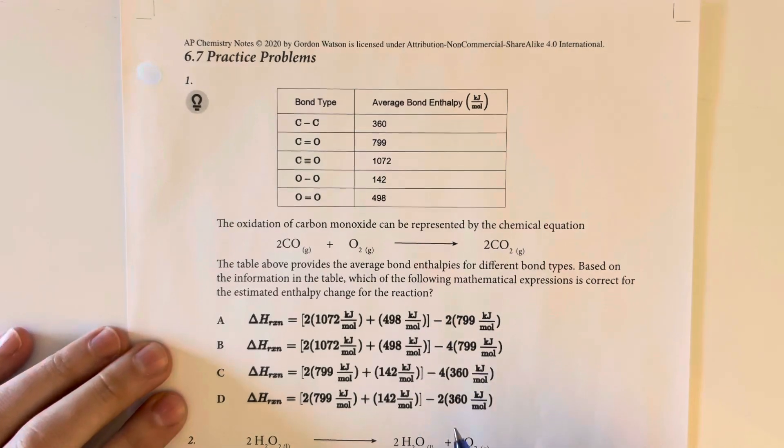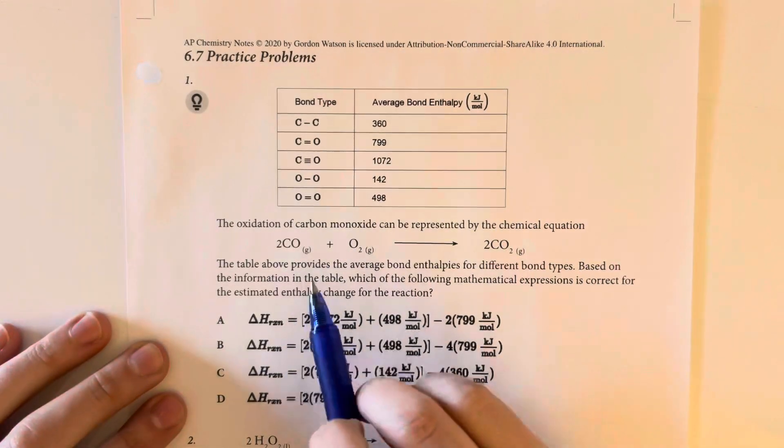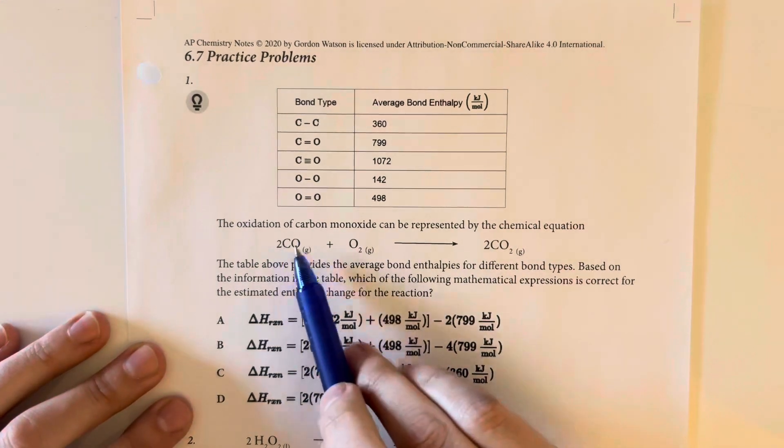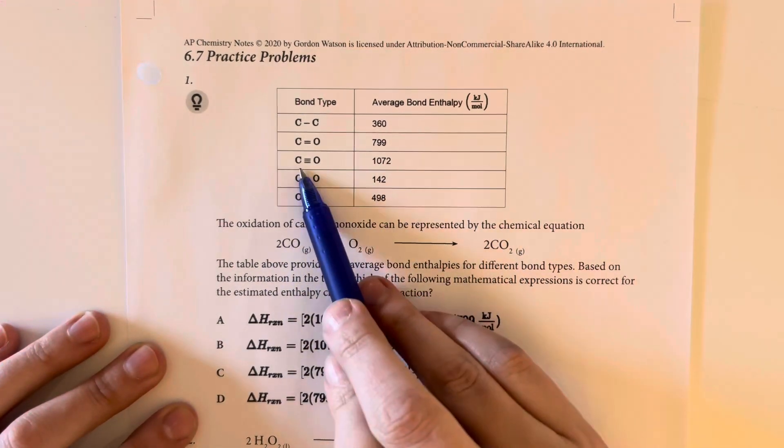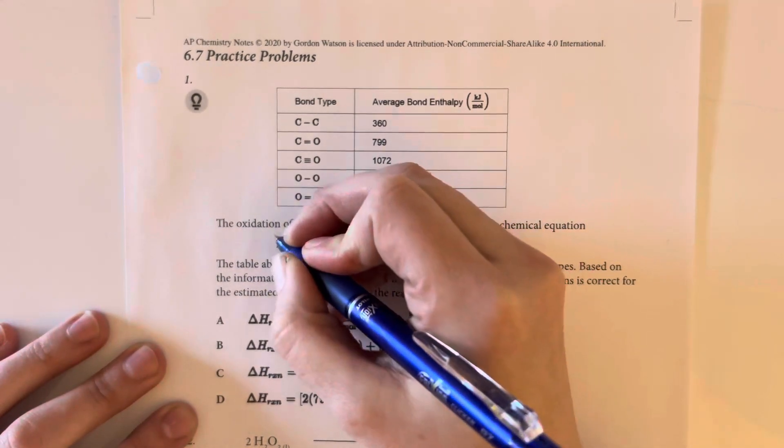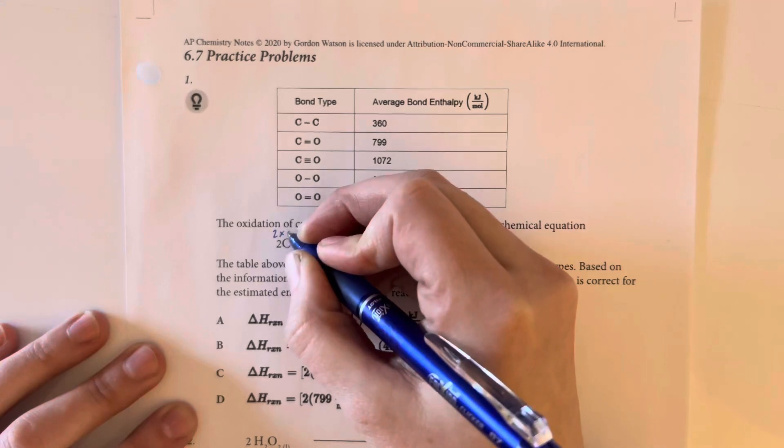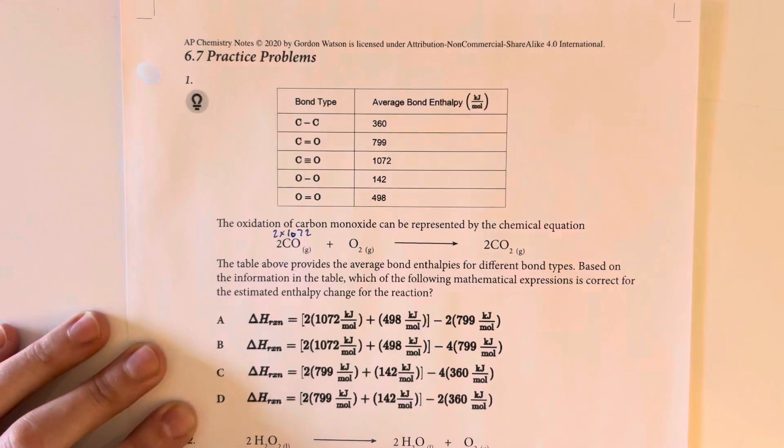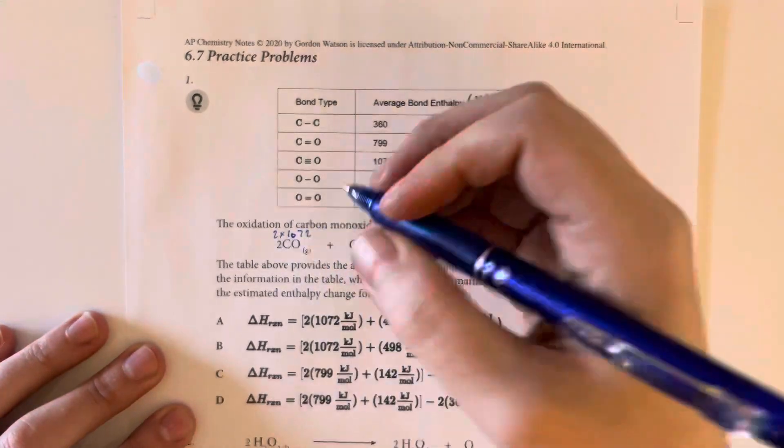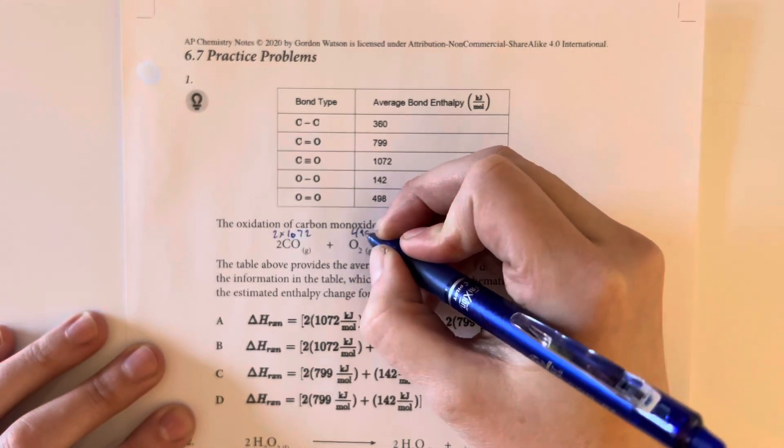Our delta H calculation is going to be our reactants minus our products. Here we have a triple bonded carbon and oxygen, so that's going to be the 1072 number. And I have two carbon monoxides here. Then I have one oxygen that's a double bonded oxygen, so that's going to be the 498.